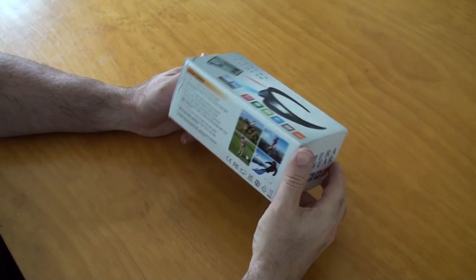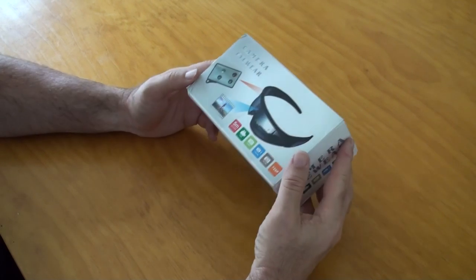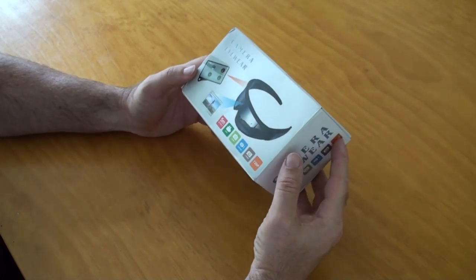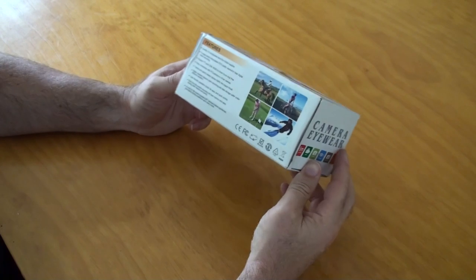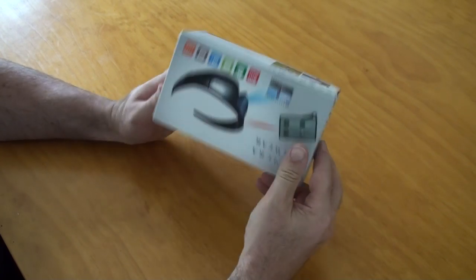All right guys, this is an unboxing for the, I think it's pronounced Dracone, HD 720. I don't know what you're going to call them, spy sunglasses.